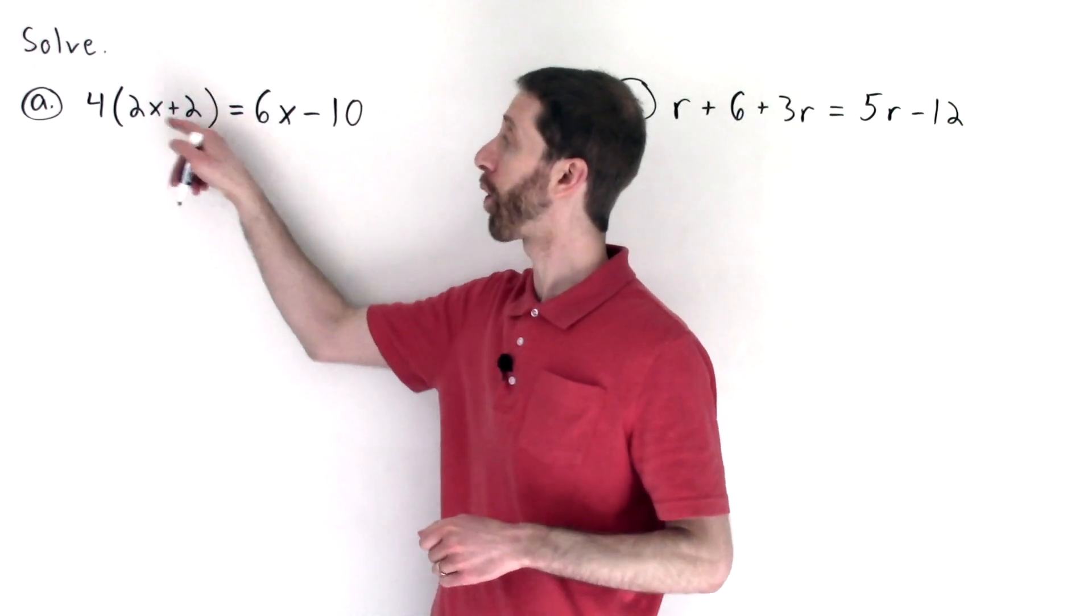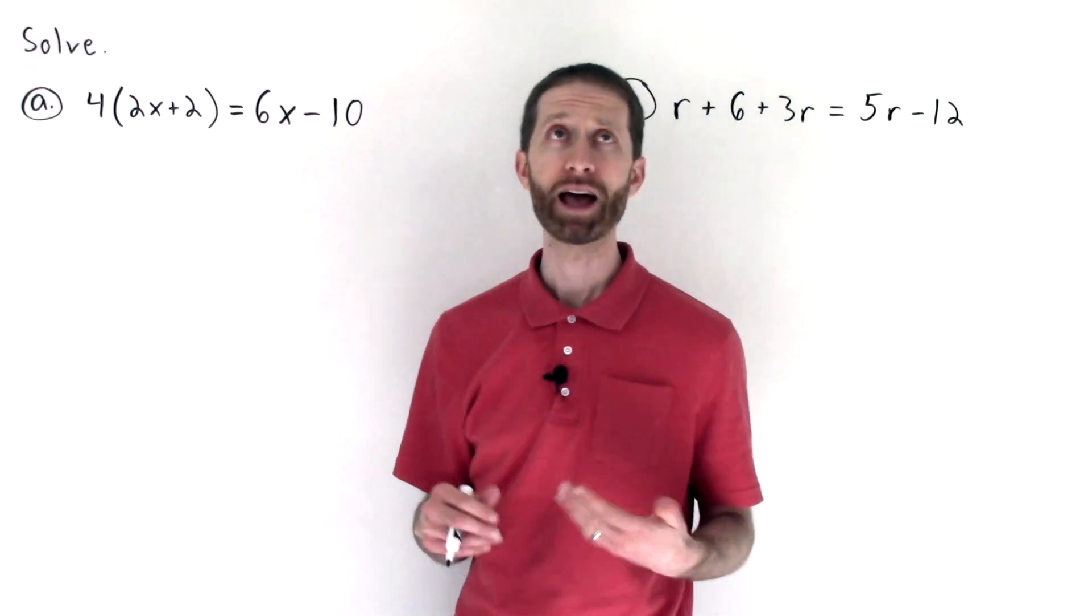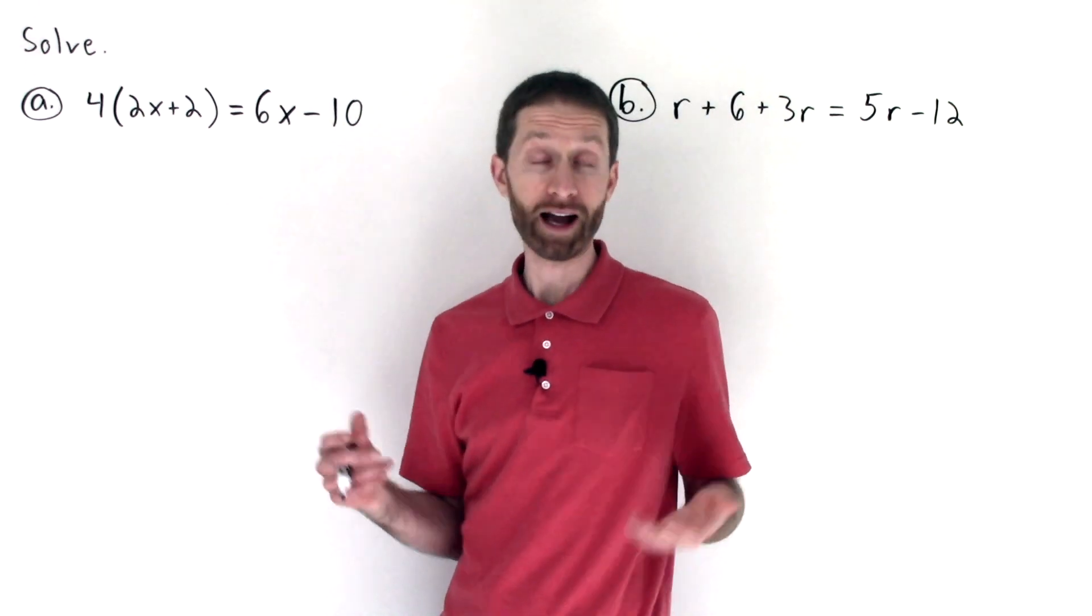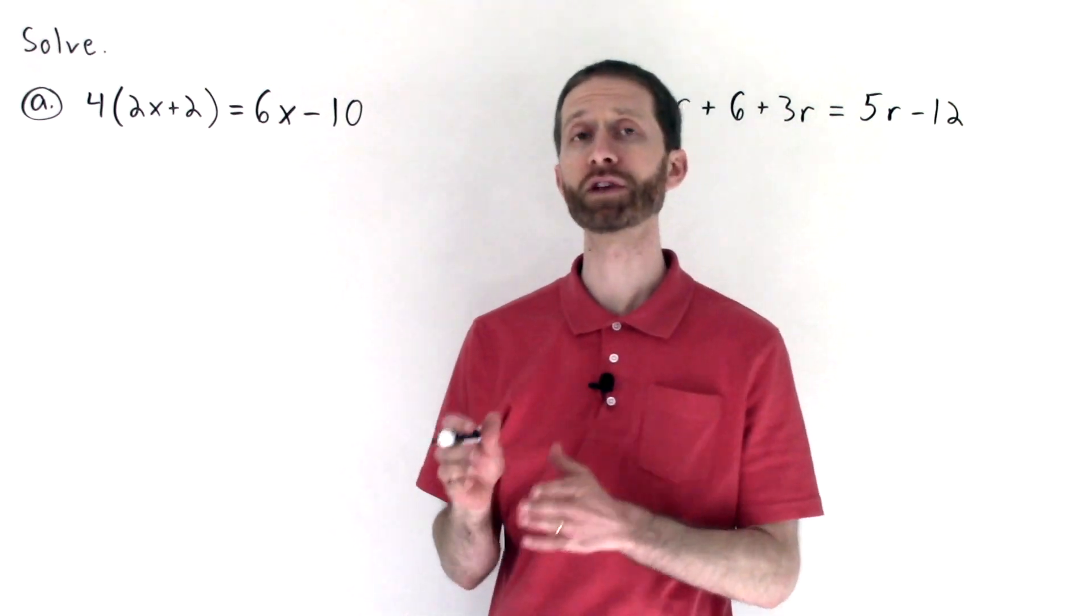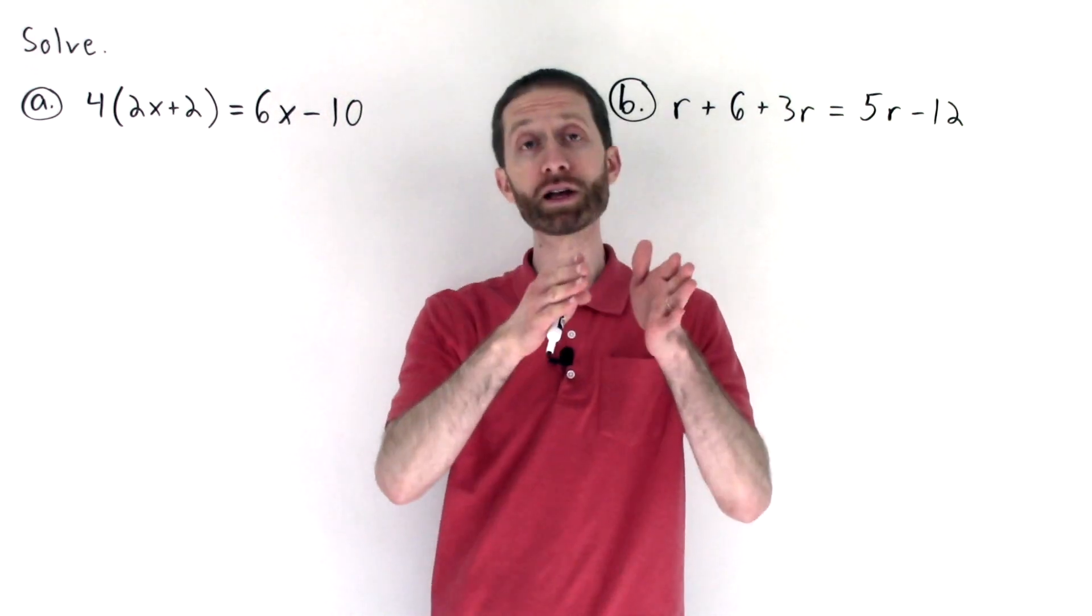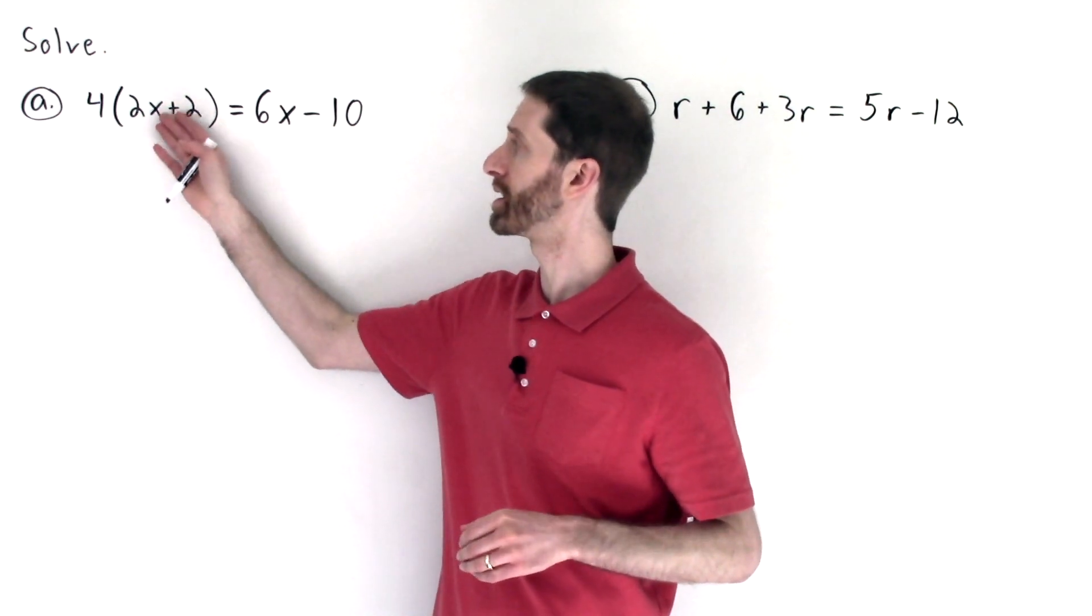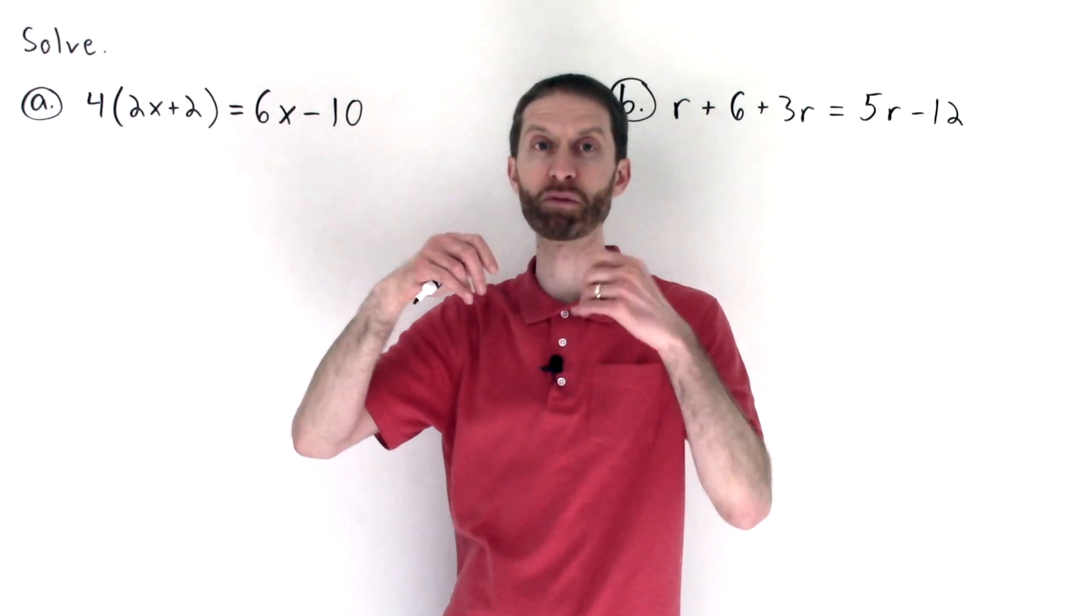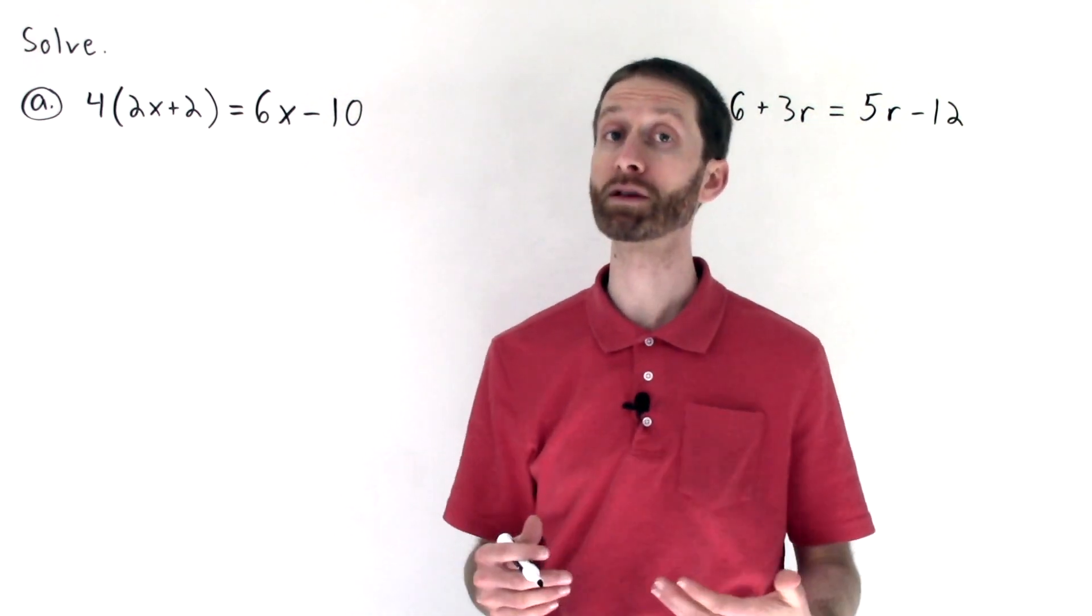You're given 4 times the quantity 2x plus 2 equals 6x minus 10. The question becomes, how do I solve something like this? I know I need to isolate the variable, but how do I do that? As we've seen in a previous video, when we have variables on both sides of the equation, we need to move a variable from one side to the other. But we can't even do that right now because this x is kind of captured or imprisoned by the parentheses. So the logical first step would be to do some simplification first.